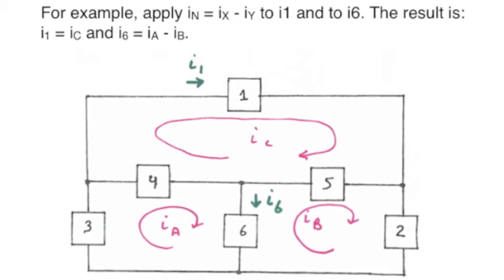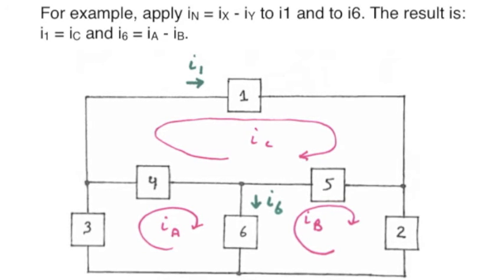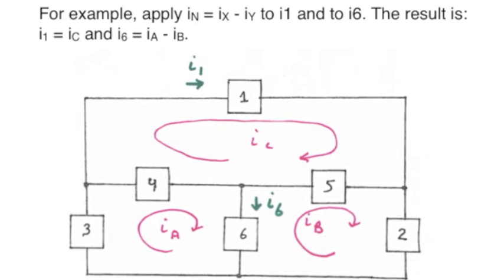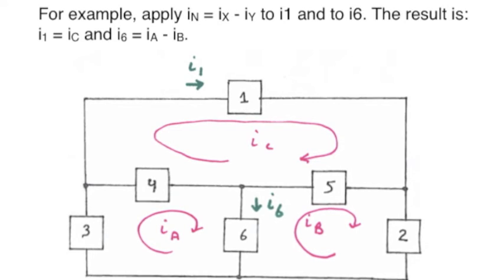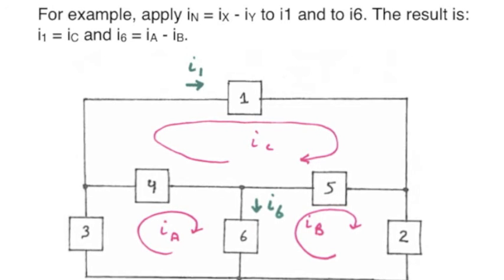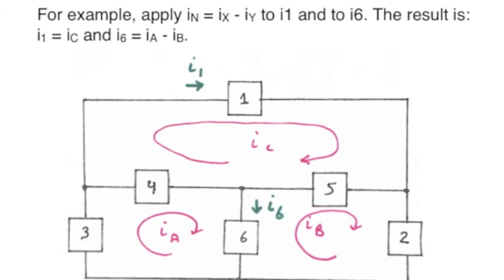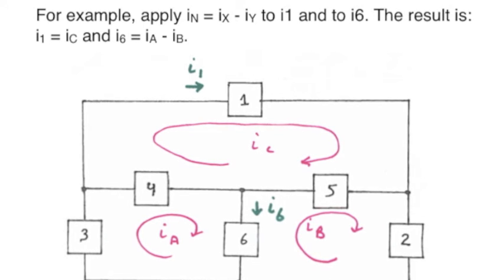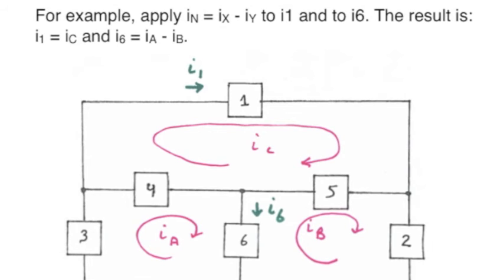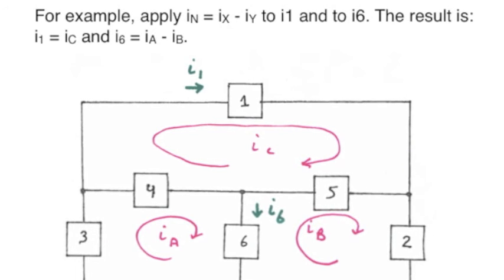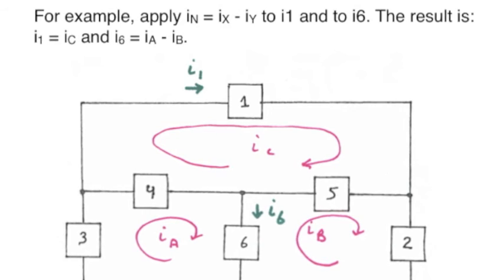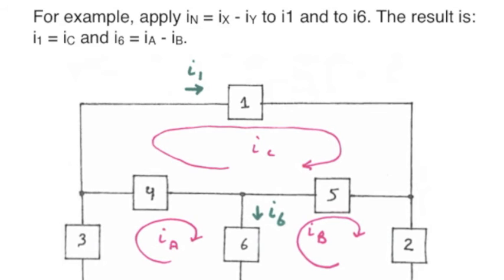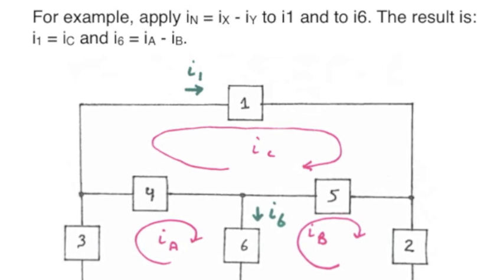Just to check, let's apply that equation to two currents we've just considered, I1 and I6. Element 1 is only in mesh C. The reference arrow for I1 is the same as mesh C, so I sub 1 equals I sub C. For element 6, which is in meshes A and B, the mesh reference arrow for A is in the same direction as I6, whereas mesh B is opposite. So I sub 6 equals I sub A minus I sub B. All good.